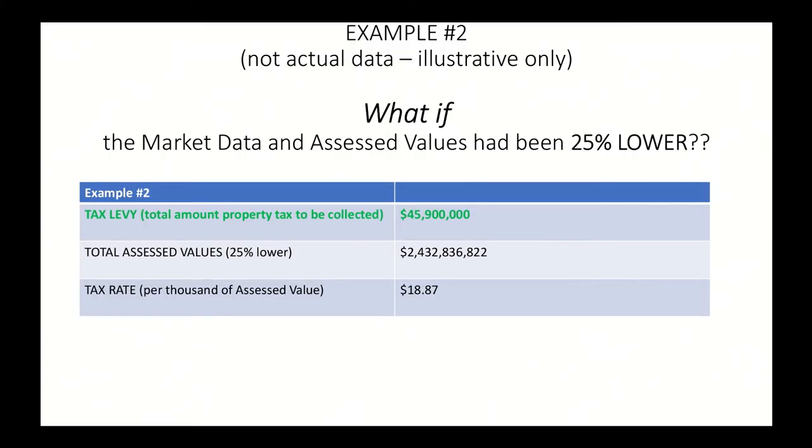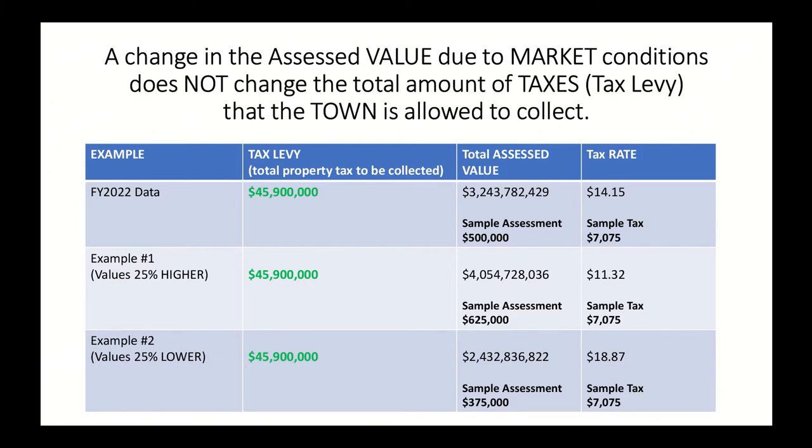Slide four presents a what-if scenario: what if last year the values had been 25% higher? The tax levy couldn't change — if it was voted at $45.9 million and Prop 2.5 restricts it there, that's what it is. So if values had gone up 25%, the tax rate would have dropped, because we can only collect $45.9 million. Slide five does the opposite: what if property values had dropped 25%? Again, the tax levy can't change. The total value would drop, causing the tax rate to increase — because we still need to collect the same $45.9 million.